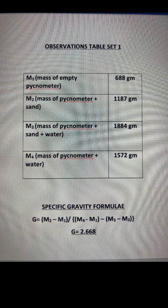Coming to the observations and calculations. We have recorded all the masses in the observation sheet. The formula for specific gravity is given as G equals (M2 minus M1) divided by (M4 minus M1) minus (M3 minus M2). Putting the respective values of M1, M2, M3, and M4 into the formula, we have obtained the value of specific gravity as 2.668.